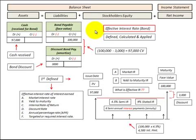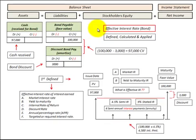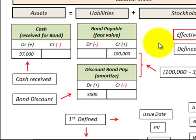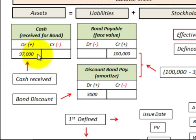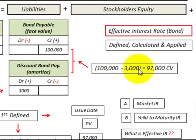Here we're going to look at the effective interest rate in terms of a bond issued at a discount. Our example is a $100,000 bond for which we received $97,000 cash, so our discount amount is $3,000. The bond's carrying value at issuance — its present value — is $97,000.